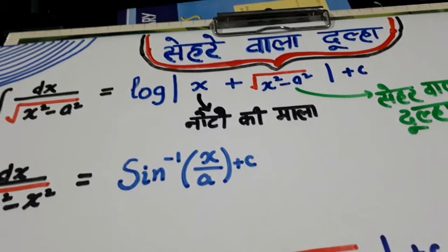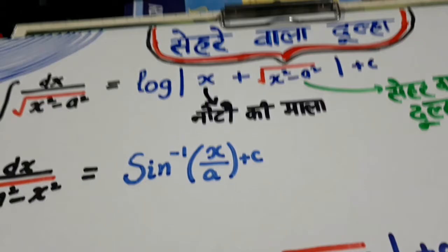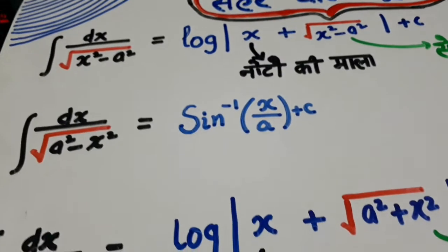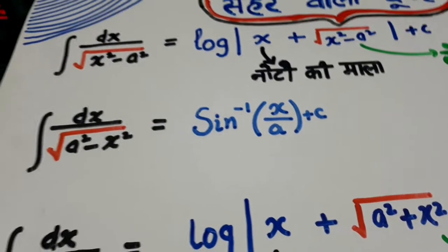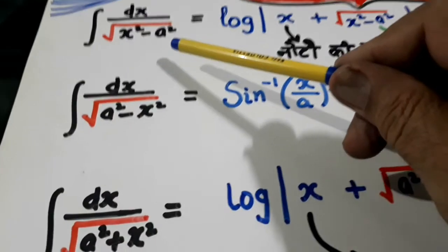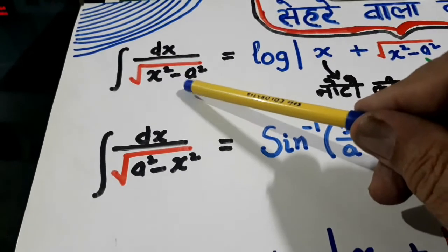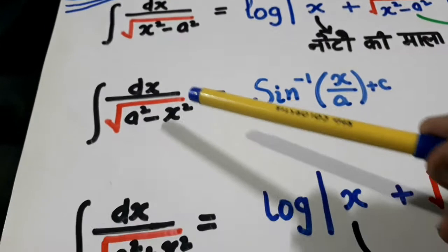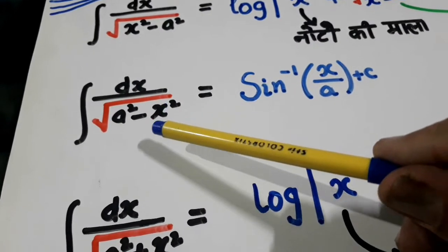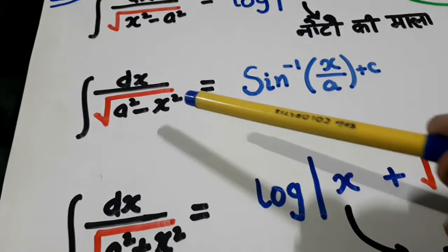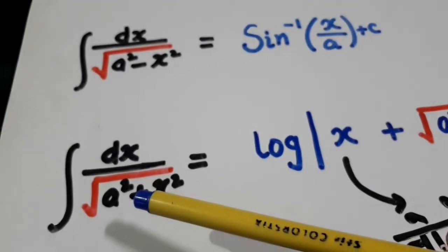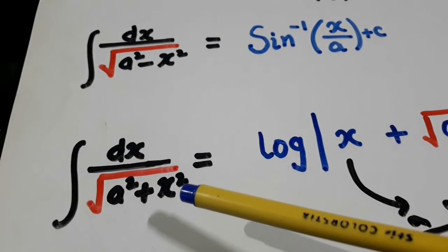Hello friends, I have come with my notes on Serevala Dula. Look here, these are the three families: dx over under root x square minus a square, second is dx over under root a square minus x square, and the third one is dx over under root a square plus x square.